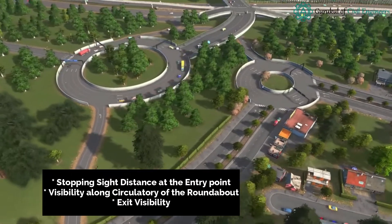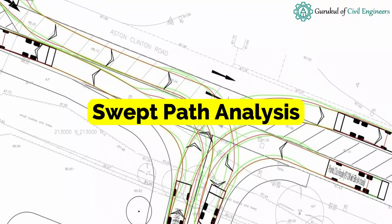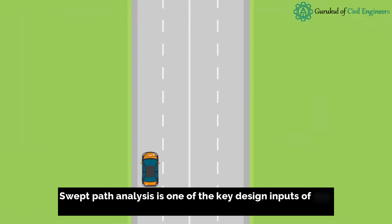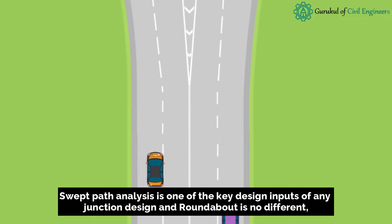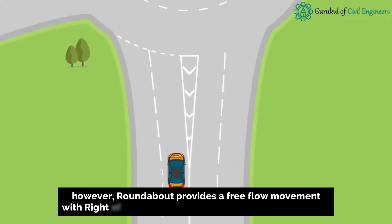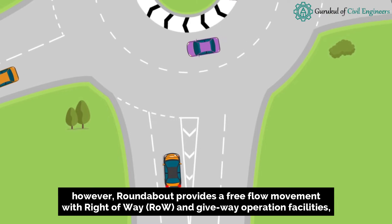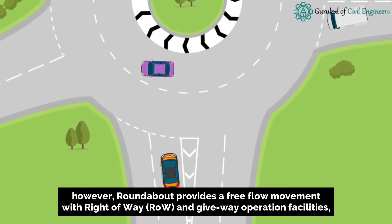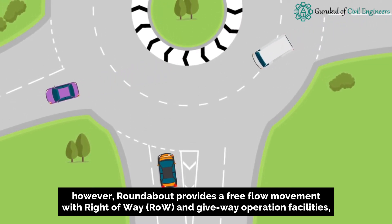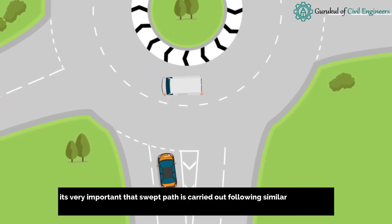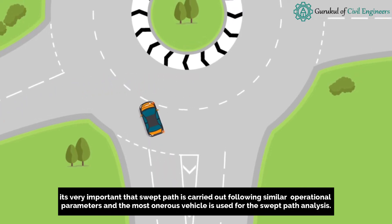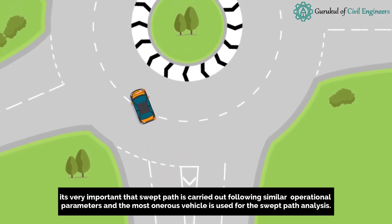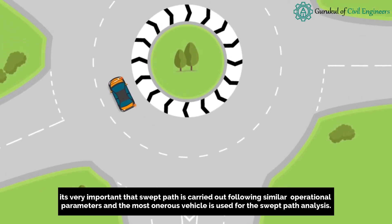Exit Visibility and Swept Path Analysis: swept path analysis is one of the key design inputs of any junction design, and roundabout is no different. However, a roundabout provides free flow movement with right-of-way and give-way operation facilities. It is very important that swept path analysis is carried out following similar operational parameters, and the most onerous vehicle is used for the swept path analysis.